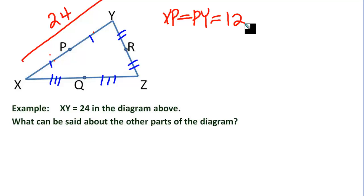We could bust out the whole mid-segment concept and say, QR also has to be, this QR has to be half the length of the side it's parallel to. So we could say, QR would also have to be 12 units long. We could also say side QR, which is a mid-segment, is parallel to side XY. And since we don't really know anything else about the measurements of the other sides, we'll probably have to leave it at that.